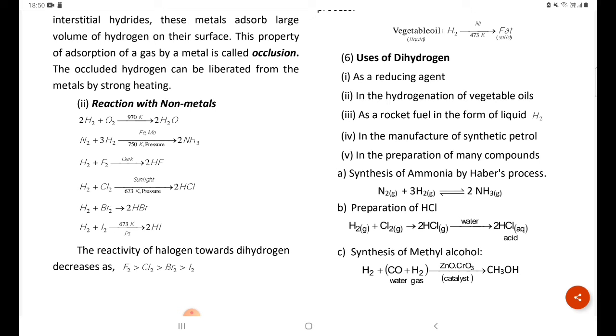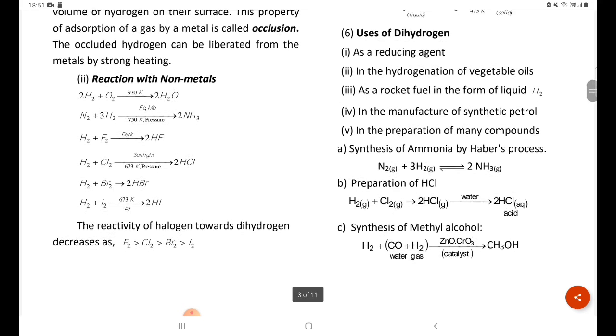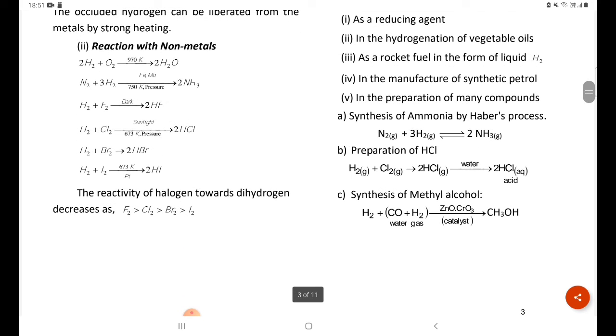Preparation of HCl: H2 plus Cl2 gives 2 HCl aqueous acid. Synthesis of methyl alcohol: H2 plus CO plus H2 gives CH3OH.